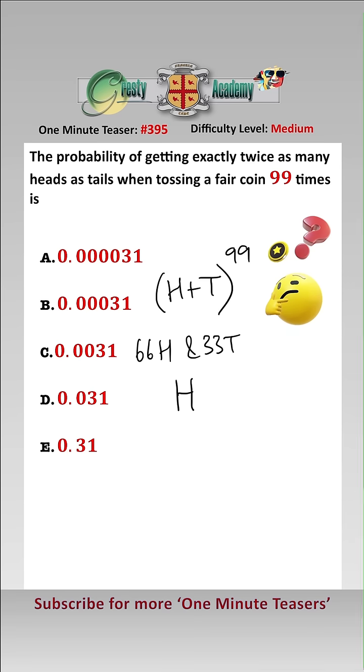Which means that we want the coefficient of h to the 66, t to the 33 in the expansion, and then to get the probability we will divide that by the sum of the coefficients.